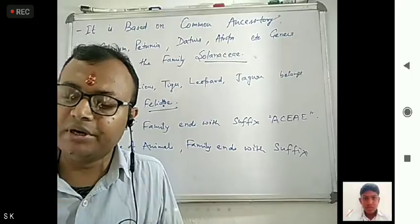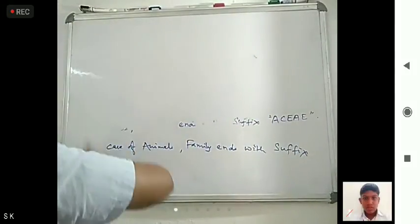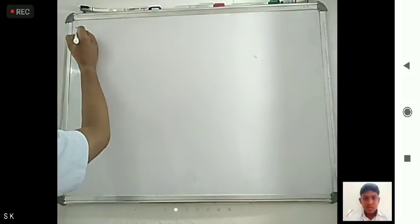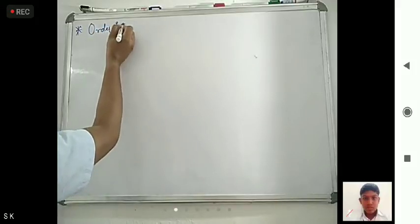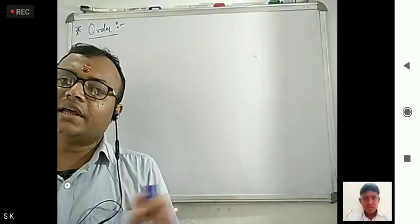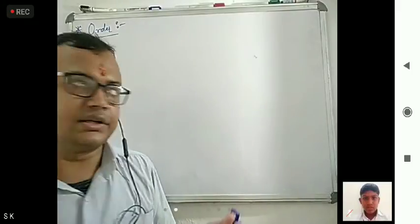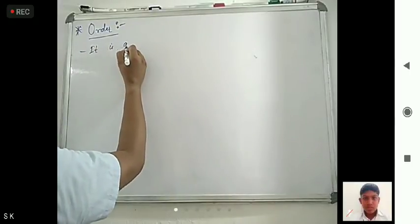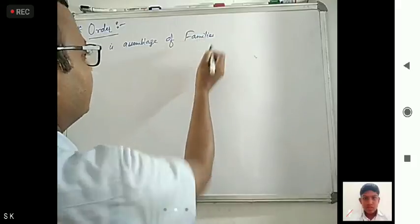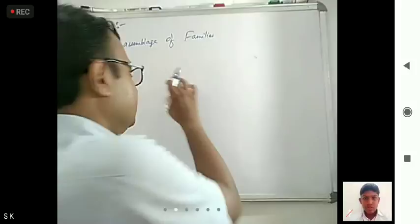Till now we have discussed species, genus, and family. The next hierarchy is Order. Order is an assemblage of different families — it is a group of families that resemble one another in a few characters.